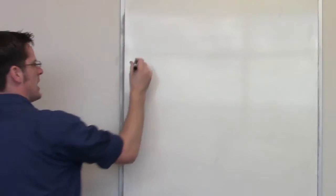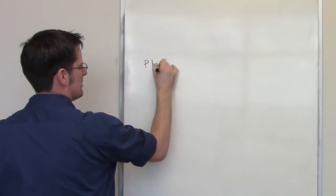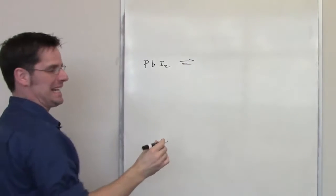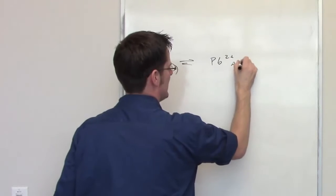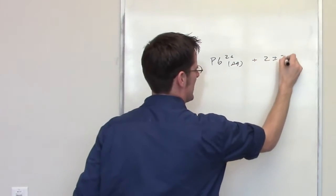This problem is talking about lead(II) iodide. So I've got lead(II) iodide, it dissociates at equilibrium into lead cation 2+, and 2 molar equivalents of iodide I-.